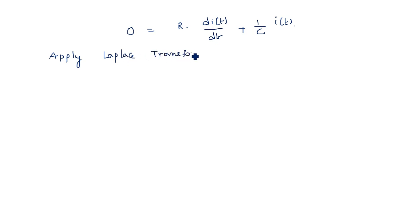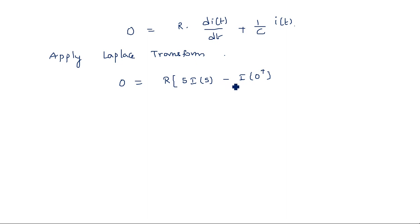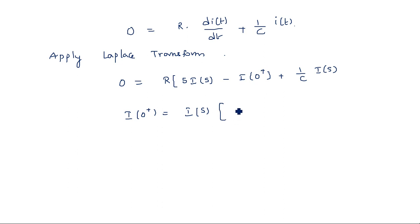Applying the Laplace transform: 0 = R·[s·I(s) − i(0+)] + (1/C)·I(s). Rearranging: I(s)·[s + 1/(RC)] = R·i(0+), so I(s) = i(0+) / [s + 1/(RC)].